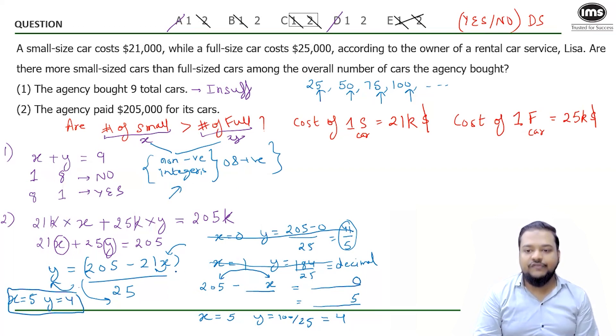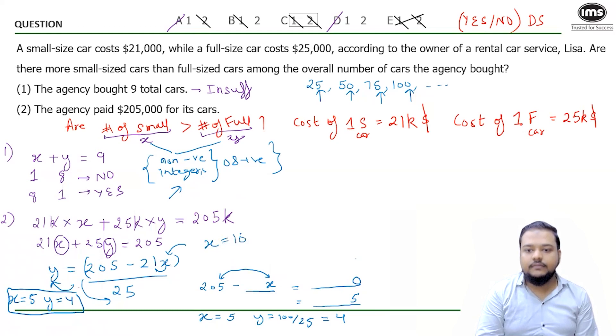So guys, X and Y both are nothing but non-negative integers. Hence we got the first solution. And the solution is X equals five and Y equals four. That is one solution I got. Now let's think, is it possible to get multiple solutions? Let me increase the value of X. So if I try to get five in the unit space of this subtraction, let me put X as 10. So if I put X equals 10, what will I get here? Y 205 minus 210 divided by 25. This is even negative.